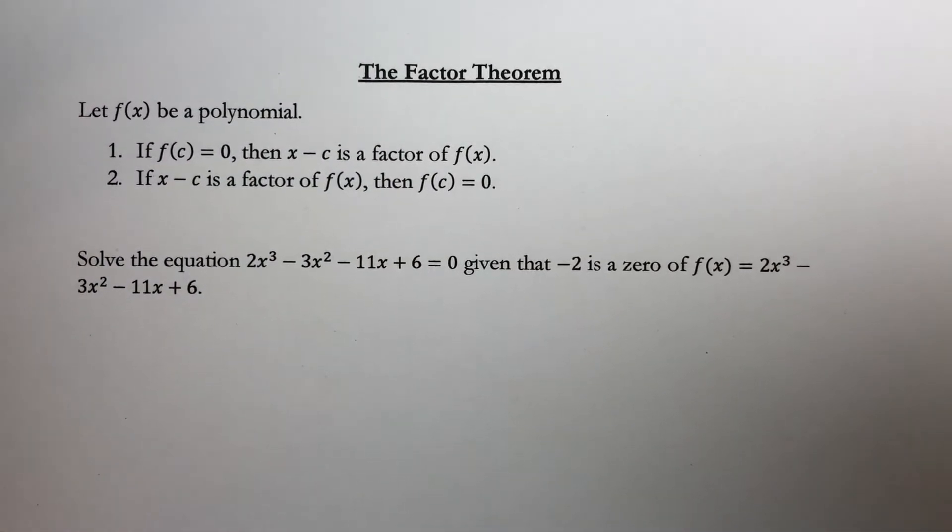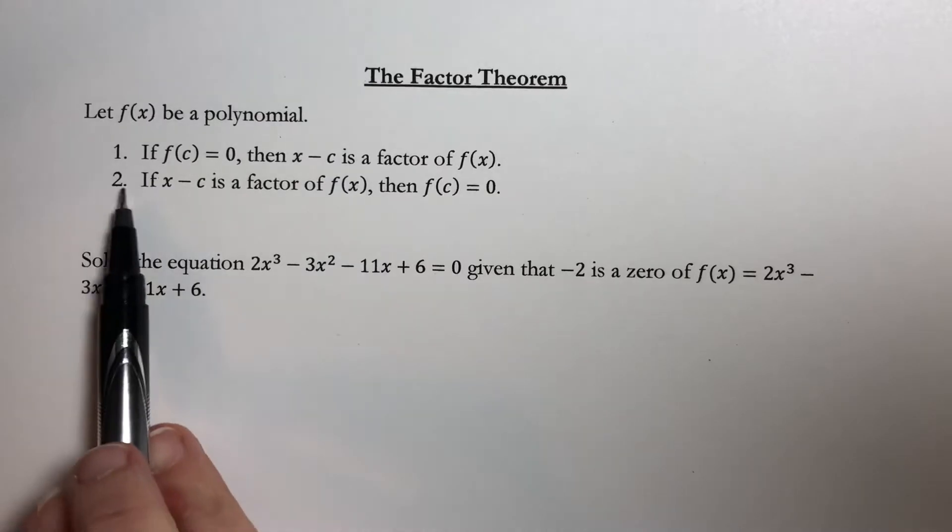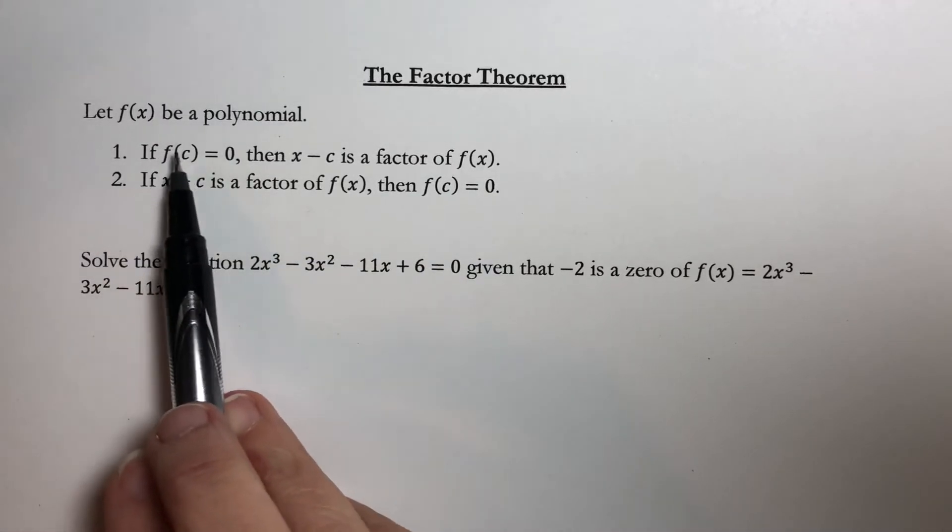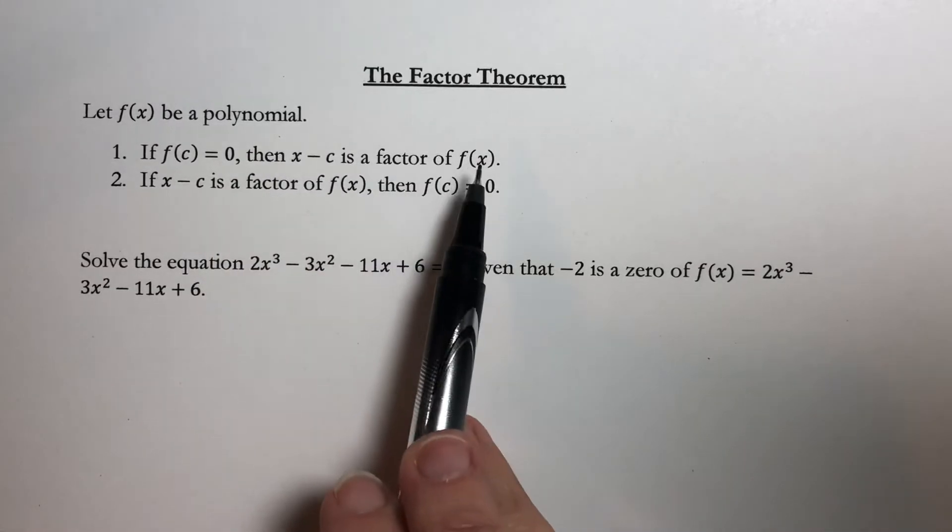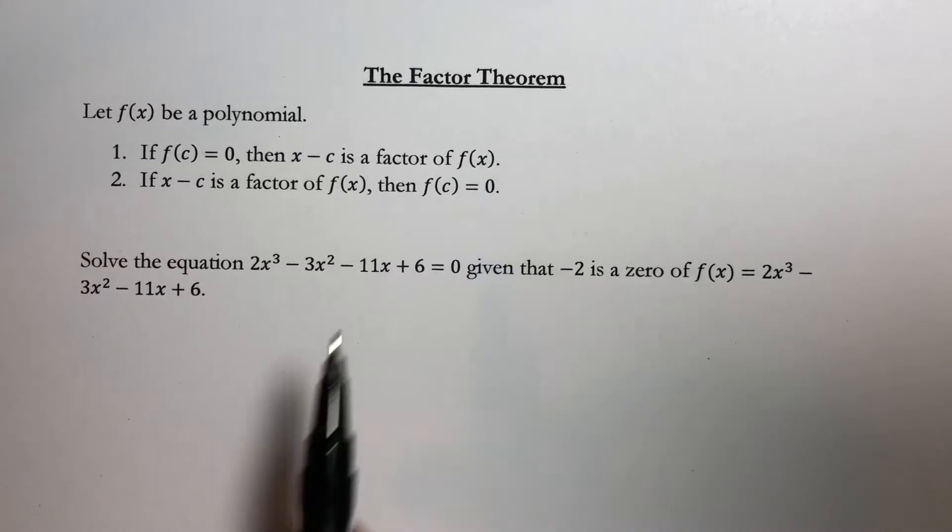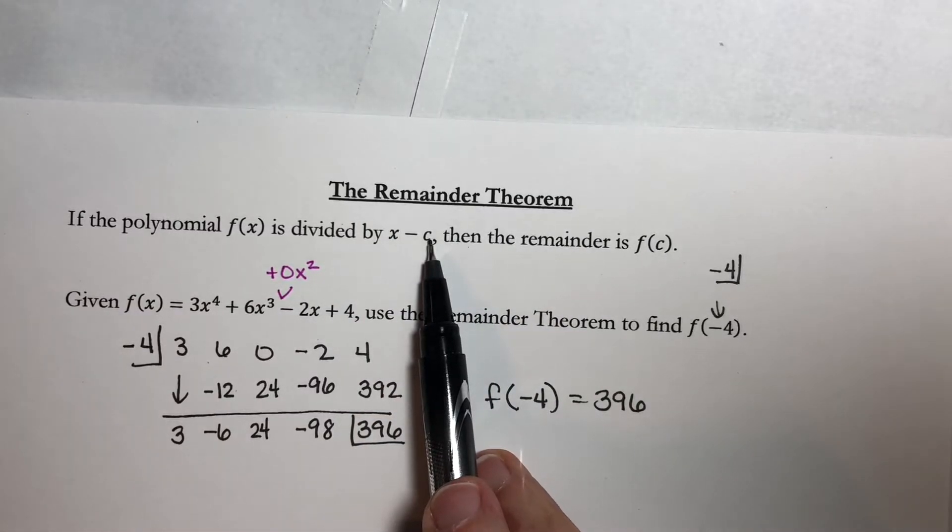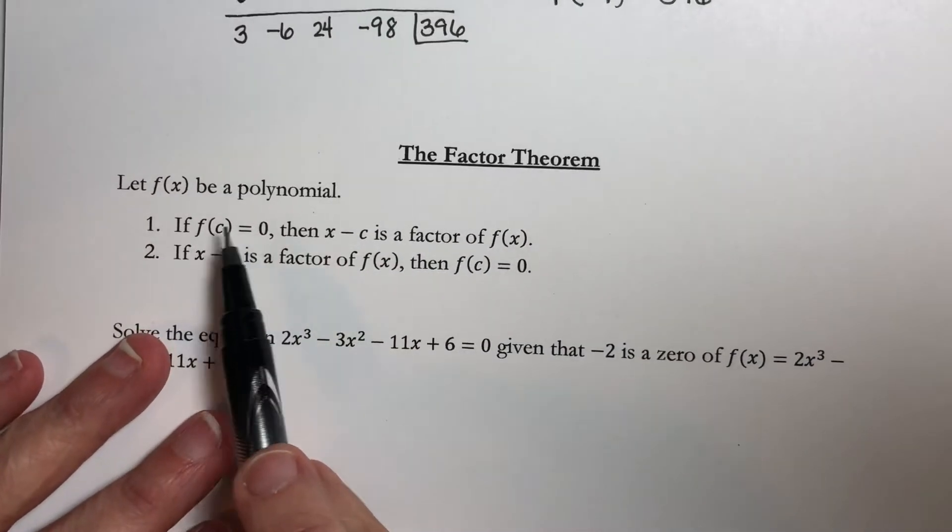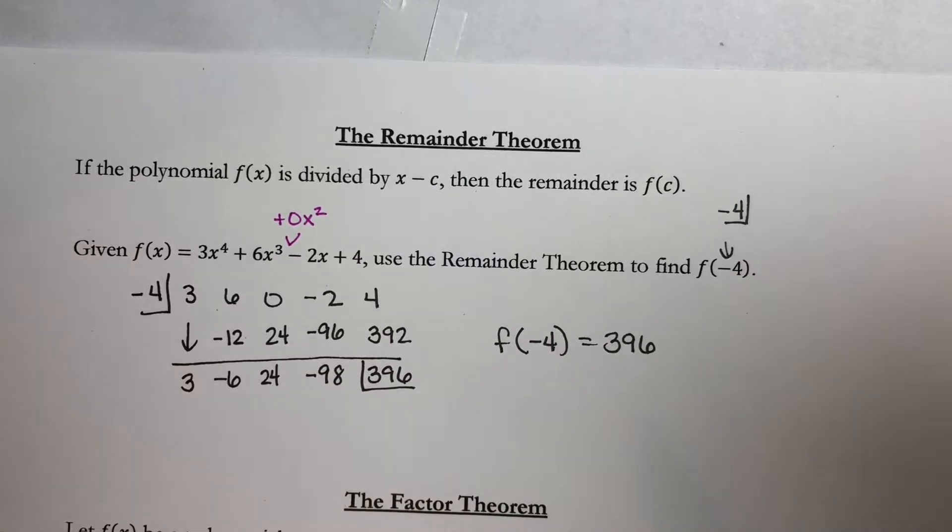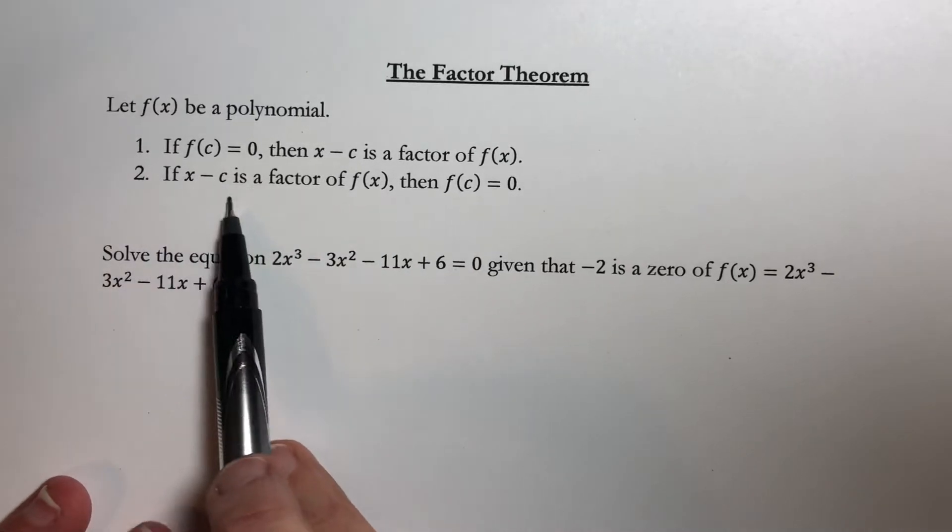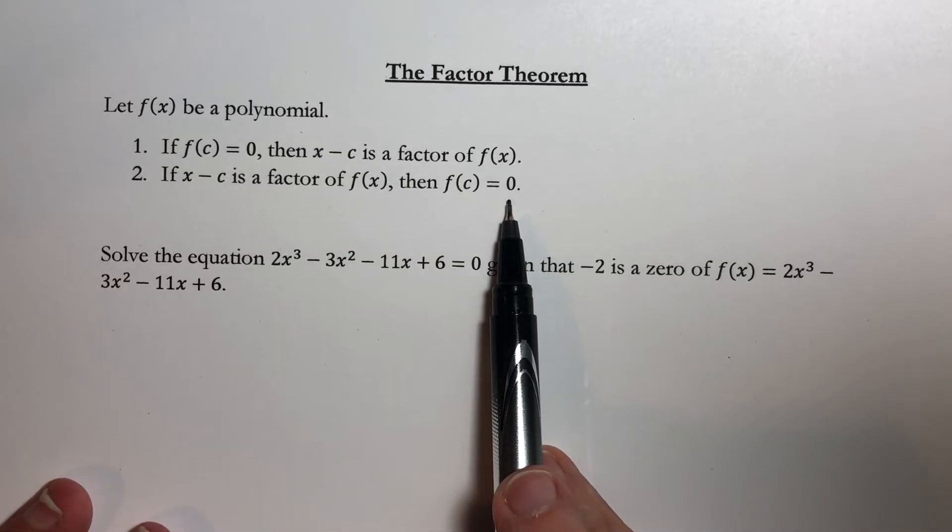So now let's go on to the Factor Theorem. And what this is saying is, if we have a polynomial, and if we know that when we plug in a number we get 0, then what we know is that x minus c is a factor of f(x). Now, this ties together a lot of the definitions we've had earlier. What we set up here with the Remainder Theorem is if we divide by this, then the remainder is f(c). Well, if our remainder is 0, then that means this was a factor. We're just tying in a bunch of definitions here. And likewise, if we know that this is a factor, then we know that if we plug in c, we get 0. So this works both ways.